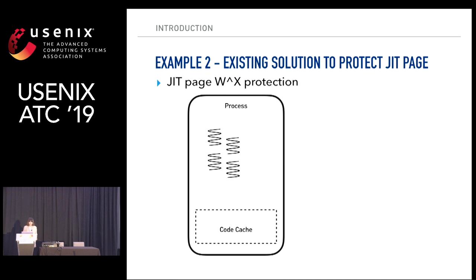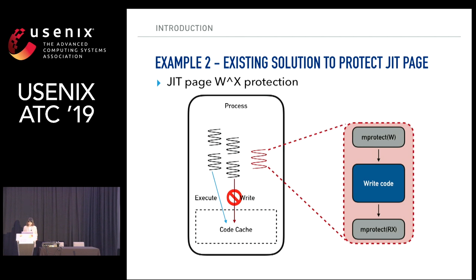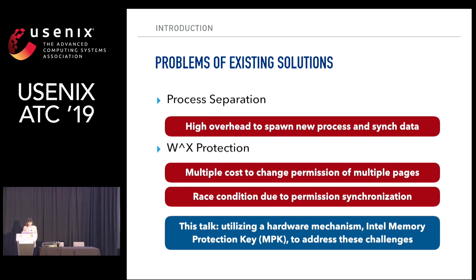Another existing solution is JIT page protection, to protect JIT pages from malicious code injection attacks. For example, if one thread writes code into the code cache and executes it, another thread that can also write to the code cache could achieve arbitrary code execution. To implement W-XOR-X protection, we assume one dedicated thread which is only allowed to write code into the code cache, and it must use MProtect to change permissions. However, these existing solutions have drawbacks: process separation generates high overhead, and W-XOR-X protection requires multiple MProtect calls for sparse pages and can lead to race condition attacks.